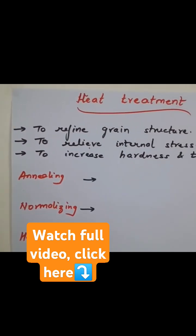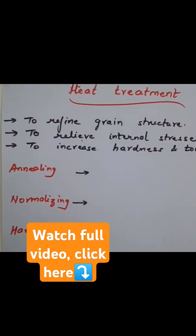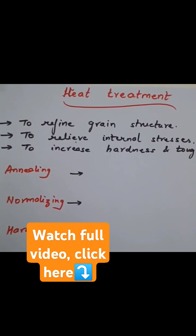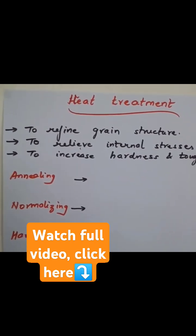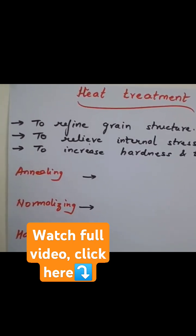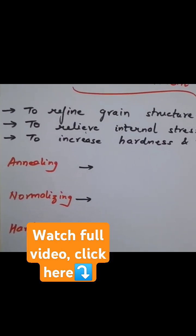By the process of annealing, what happens is ductility improves, toughness improves, internal stresses are reduced, and we get a better refined grain structure.